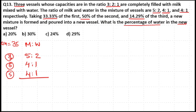This is 7 parts; 7×5 = 35, so multiply the first ratio by 5. This is 5 parts; 5×7 = 35, so multiply the second ratio by 7. This is also 5 parts; 5×7 = 35, so multiply the third ratio by 7.